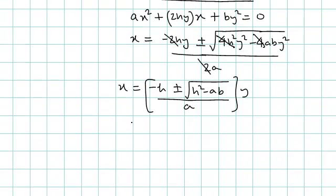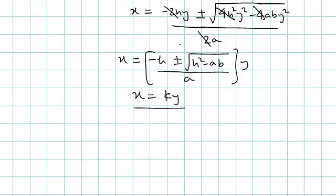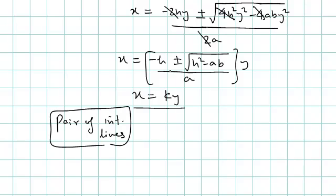This is of the form x = ky, which is a line passing through the origin. For a pair of intersecting lines, the two equations should be distinct, meaning the ± must return two distinct values. The condition for this is h² − ab > 0, because then the square root of a positive number exists and we get two distinct equations — a pair of intersecting lines passing through the origin.